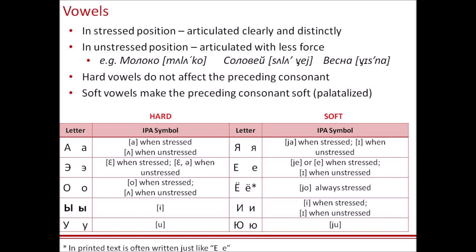Another important thing to understand about Russian vowels is that they come in two types: hard vowels, which do not affect the preceding consonant, and soft vowels, which make the preceding consonant soft.